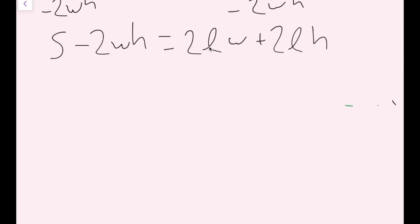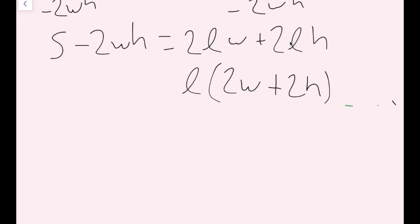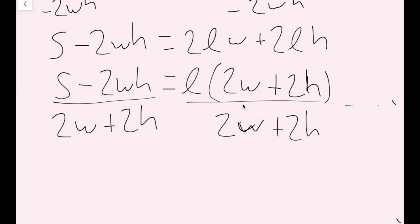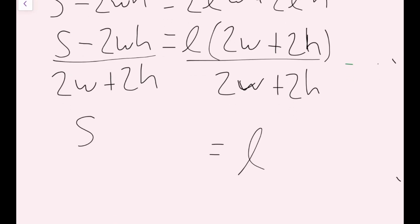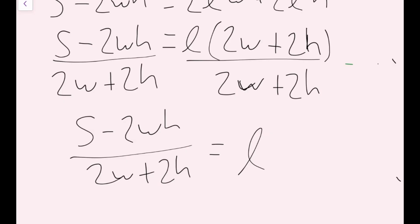Next I'm going to factor out an l — reverse distribute this l — and rewrite the right side as l times (2w plus 2h). If you distribute this l, you get the 2lw term and the 2lh term. Now I just have l times this whole expression, so I'll divide both sides by (2w plus 2h). The final answer is l equals (s minus 2wh) over (2w plus 2h), and this fraction cannot be simplified anymore, so we are done.